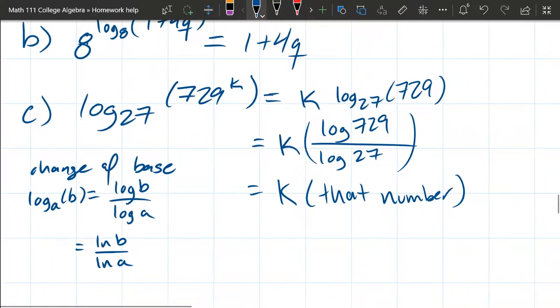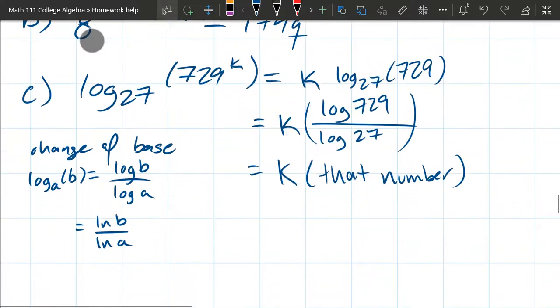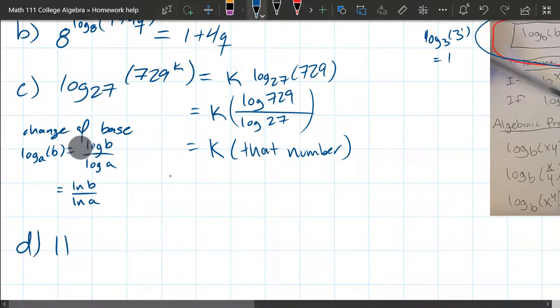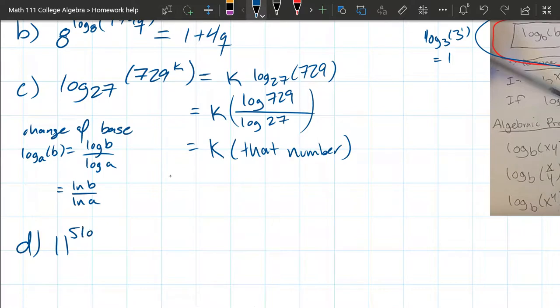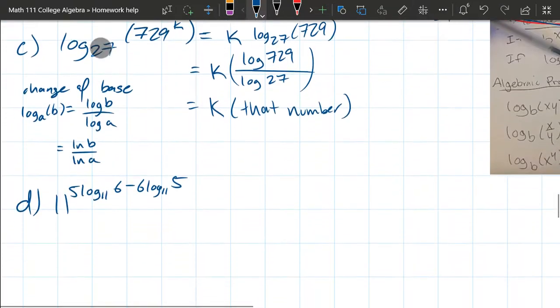All right, so that's part c. Now we're about to look at part d—it looks a little bit more complicated. All right, so part d is going to be 11^(5log₁₁(6) - 6log₁₁(5)). Just make sure we wrote that down right. Yes, all right.